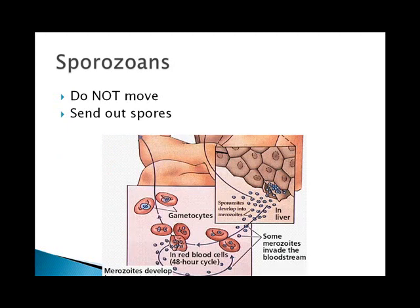Sporozoans are the last kind of animal-like protist, called sporozoans because they send out spores. They don't move on their own. One of the most important sporozoans is shown in this life cycle diagram — that's for malaria, which kills large numbers of people.